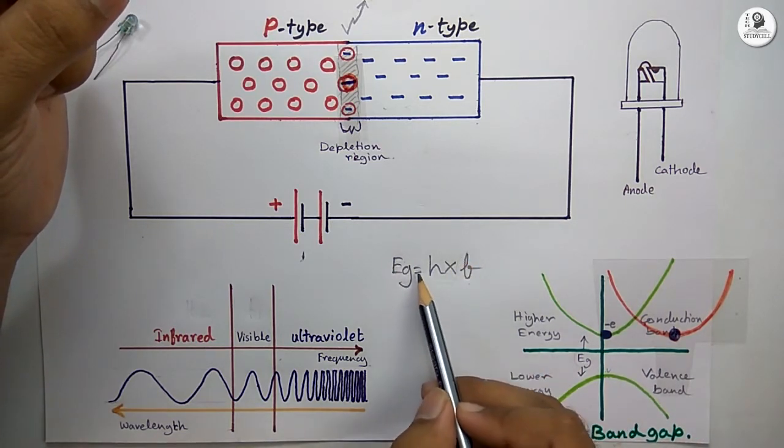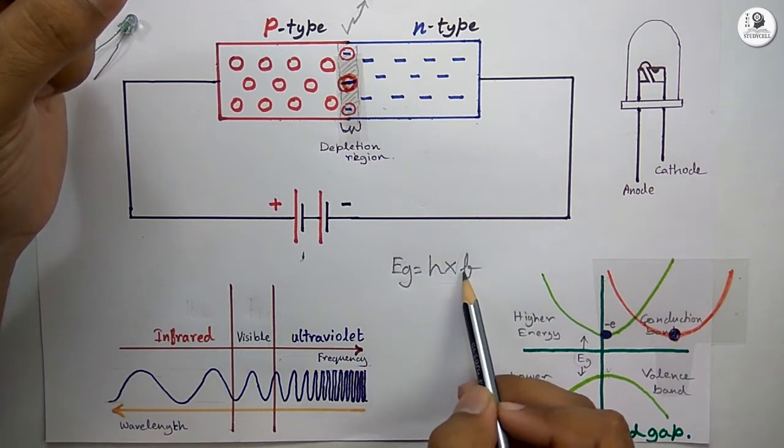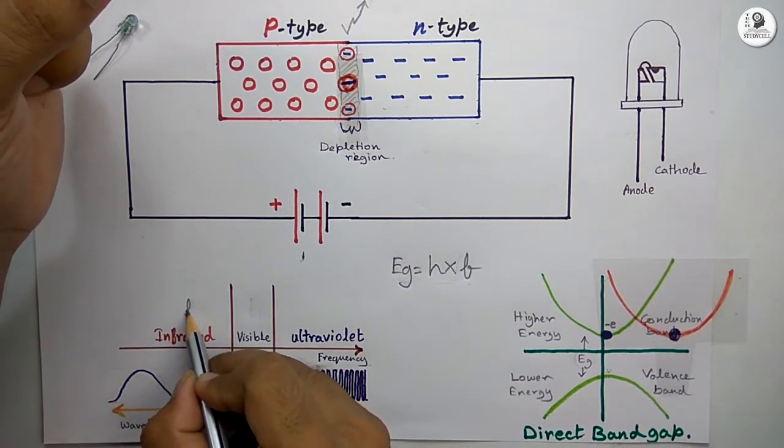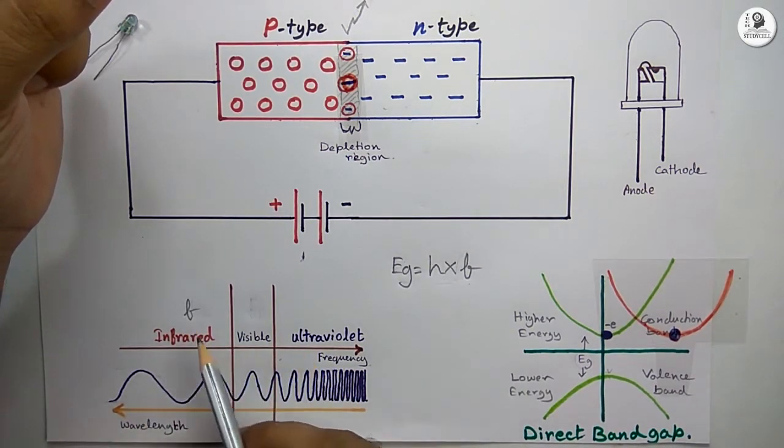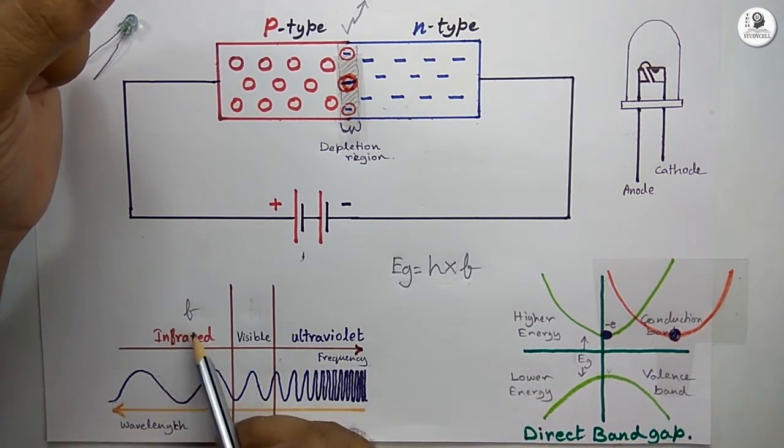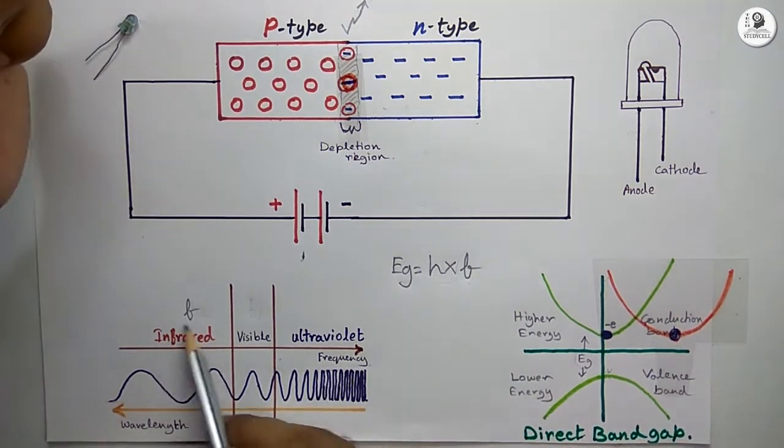In that case, the Eg, which equals Planck constant multiplied by the frequency of the electromagnetic radiation, the F is within the infrared region. So the radiation is not visible to our eyes.